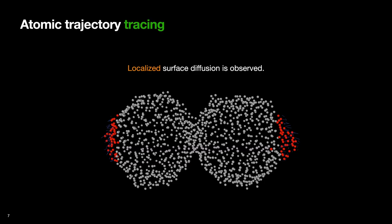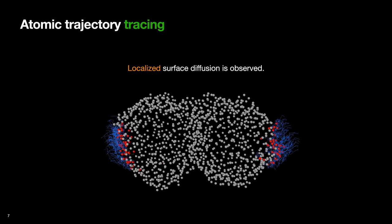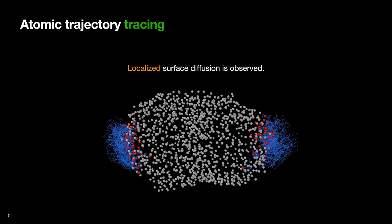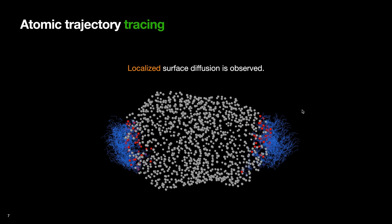One thing that was quite interesting was that when we traced the atomic trajectory, we could see that the diffusion was highly localized. As we can see here, when tracing atoms that are far away from the contact region, those atoms remain pretty much where they were while the sintering progresses quite significantly. This is quite contrasting to the commonly known concept of high mobility of liquid-like surface atoms and surface diffusion of nanoparticles.